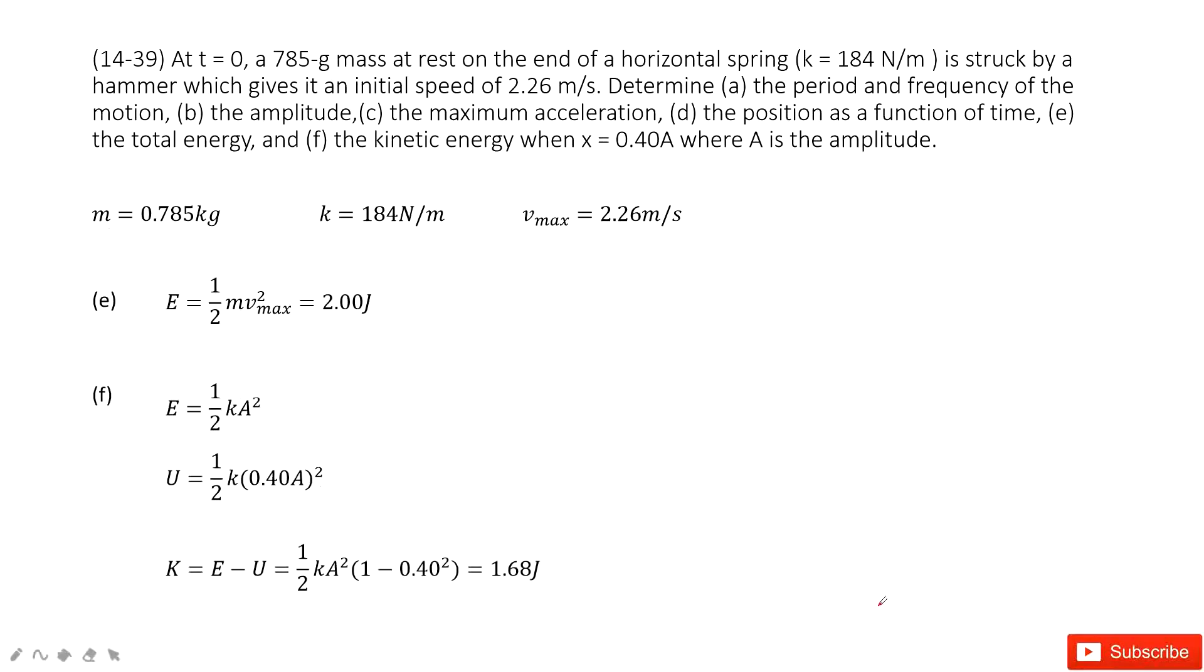The next one, we need to find the total energy. As we said, the simple harmonic oscillation's energy is always conserved. So the energy just equals the initial energy: one half m vmax squared.